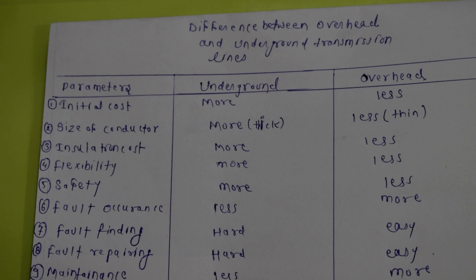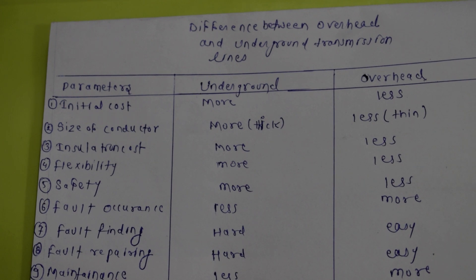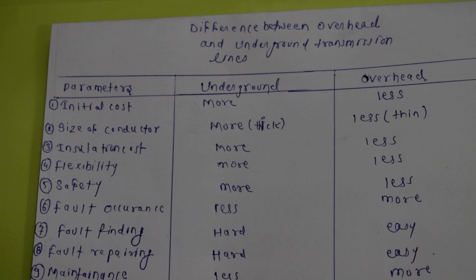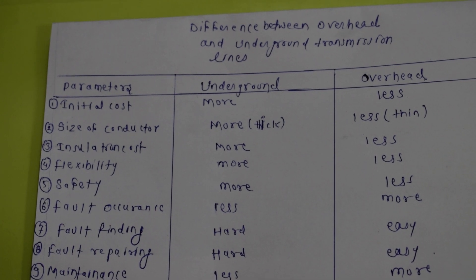In overhead transmission, if there is any fault and the transmission line falls down, it can cause harm to human beings, animals, and others nearby. So this is the safety point — underground is clearly safer.